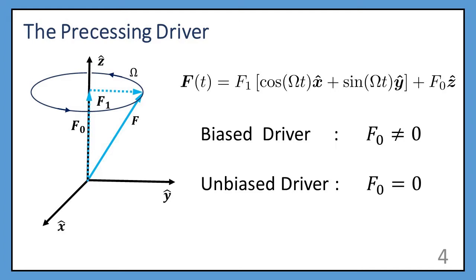So the driver we used had a changing component, F1, that rotates around at a constant rate, Ω, and a constant component, F0, that makes the driver, on average, point towards a preferred direction. And so if F0 is present, we call it a biased driver. If F0 is not present, then we call it an unbiased driver.